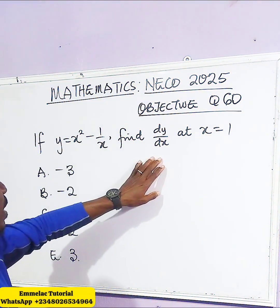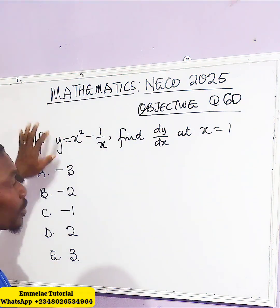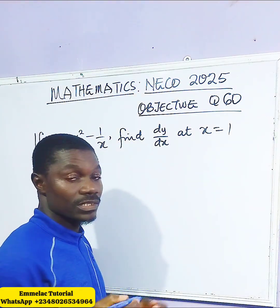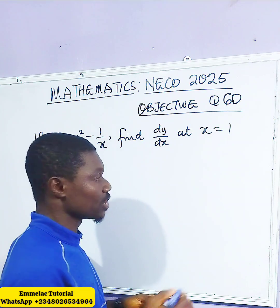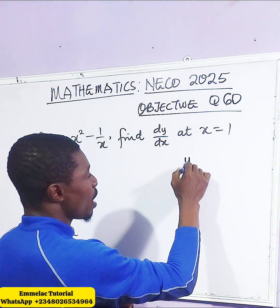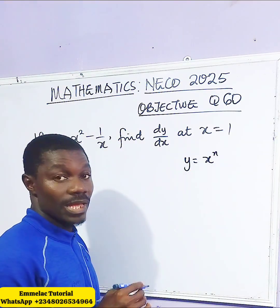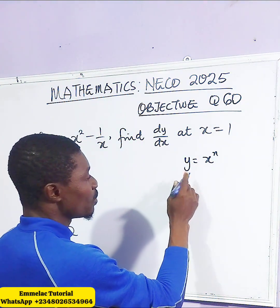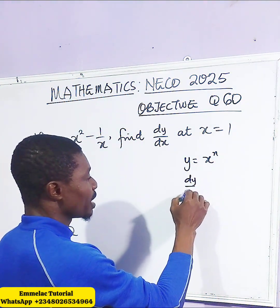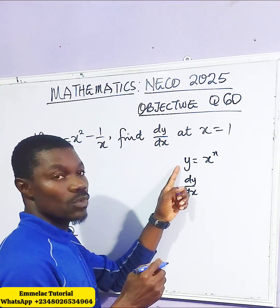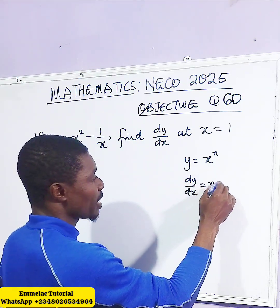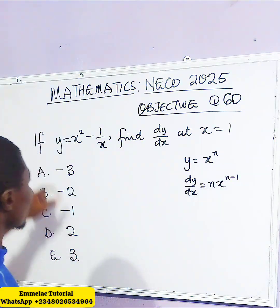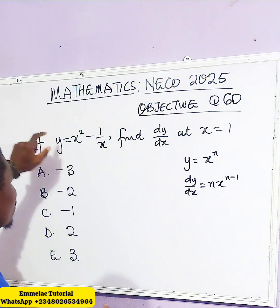For us to find dy/dx from this function, recall that the general formula for differentiation is: when you have y equals x to the power of n, where n can be from 1 upward, then dy/dx — which means differentiating y with respect to x — gives you n times x to the power of n minus 1. So let us apply this rule.